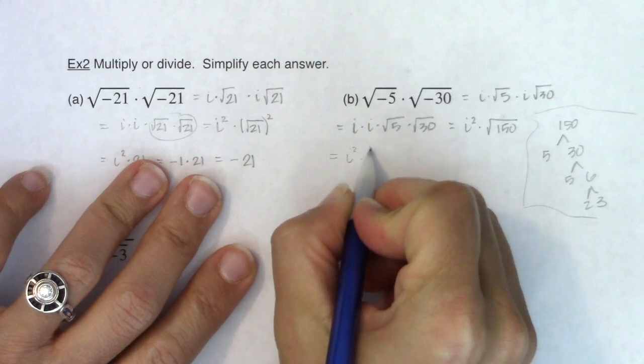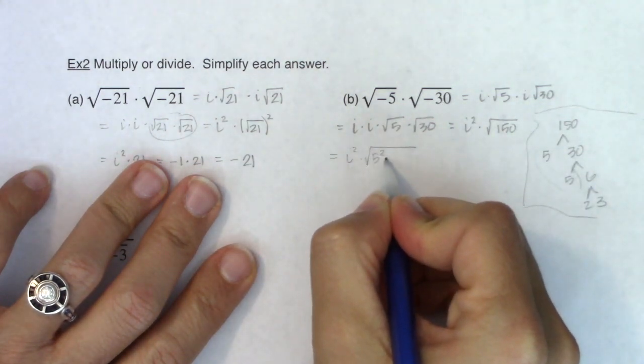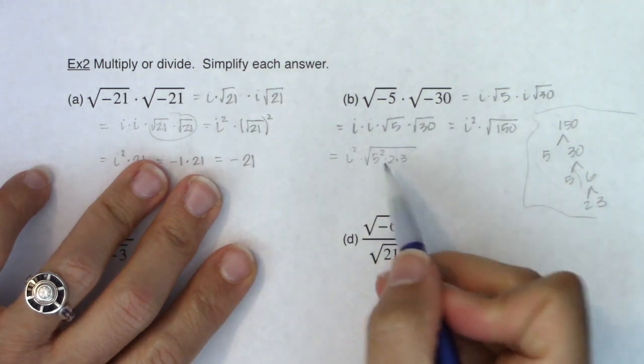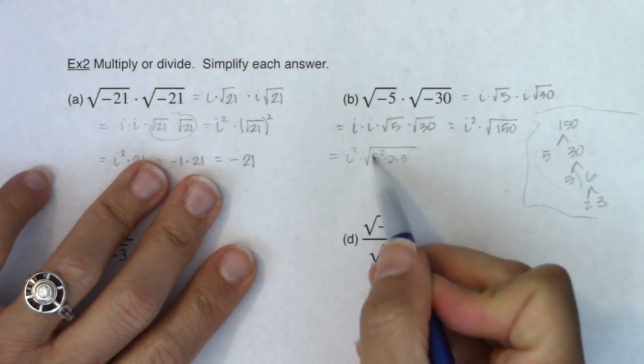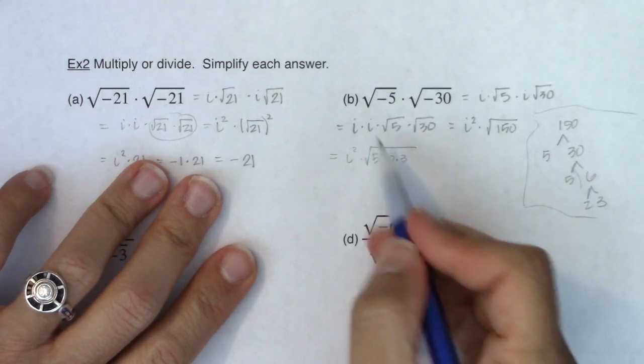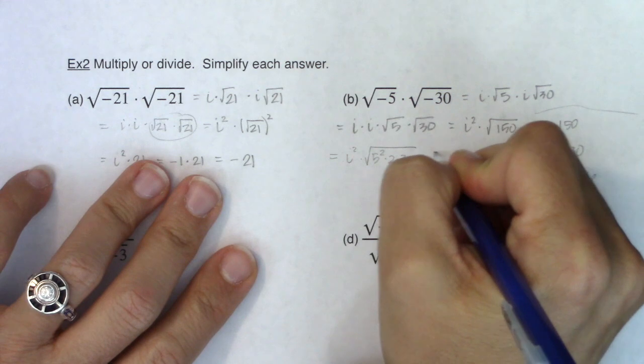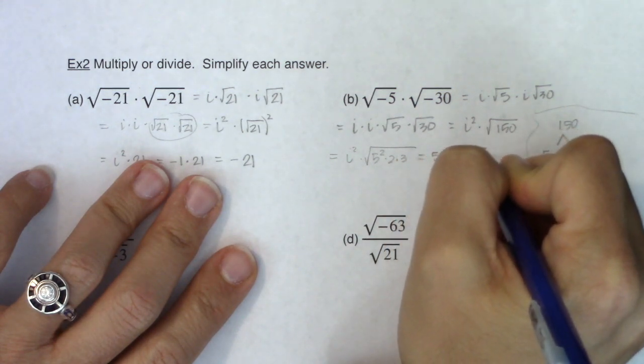So as I start to break this down, I've got i squared times the square root of, it looks like I have a pair of 5's and then I have 2 times 3. So the 5 can leave the radical, I should say the 5 squared will leave, but when it comes outside the radical as multiplication, it's going to come out as 5.